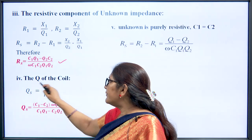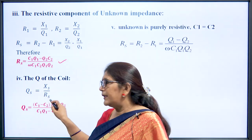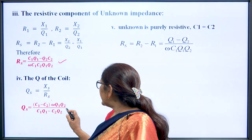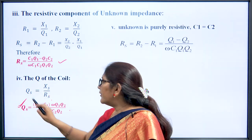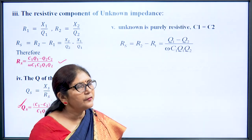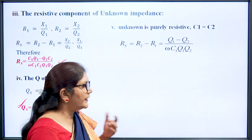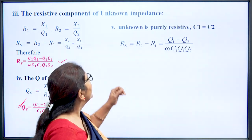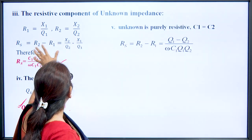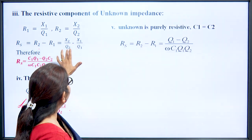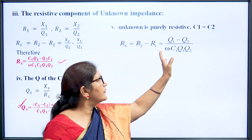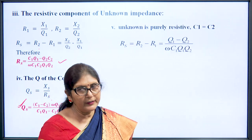We can similarly calculate the Q of the coil from Q = Xs/Rs, substituting the values of Rs and Xs obtained earlier. For a pure resistance (no change in capacitance), by varying resonance frequency, the unknown resistance Rs = R2 − R1 = X2/Q2 − X1/Q1, which simplifies to Rs = (Q1 − Q2)/(ω·C1·Q1·Q2).